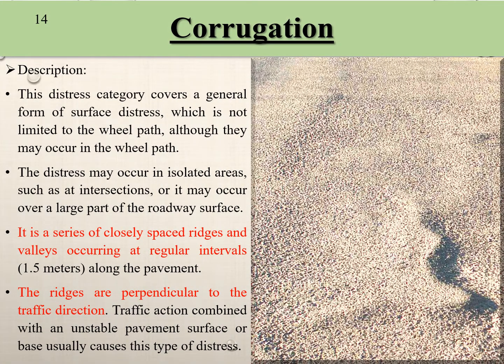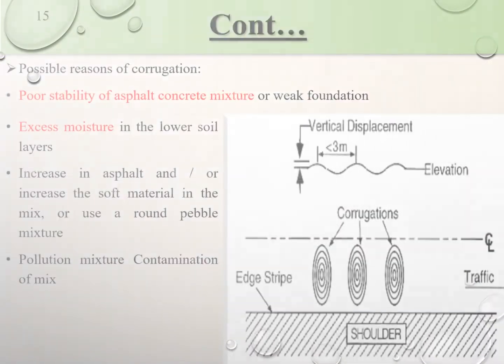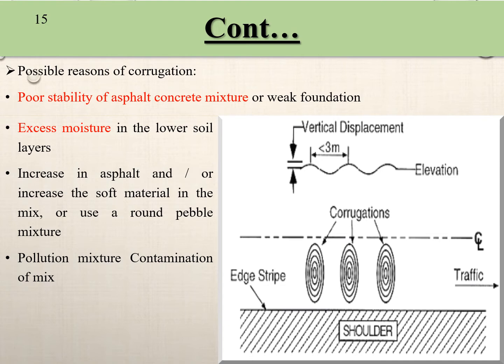Corrugation — here we find a shape like a snake, in which a series of closely spaced ridges and valleys are found. It mainly occurs perpendicular to the traffic direction. It is particularly caused by excessive moisture content and inadequate stability of asphalt.